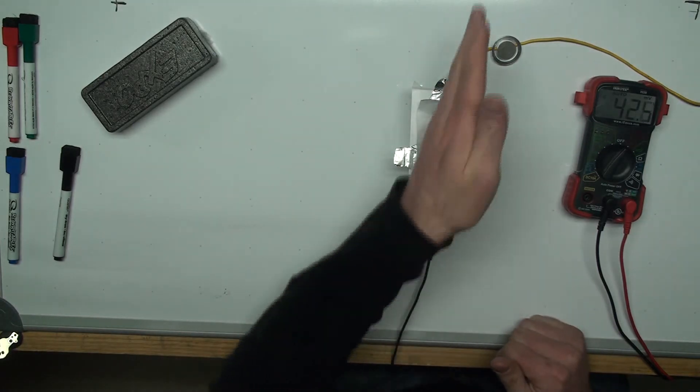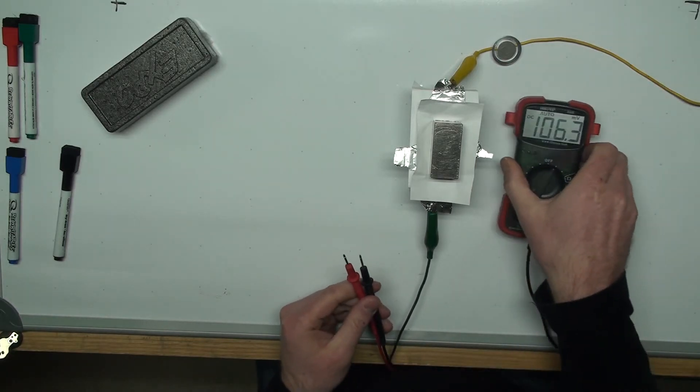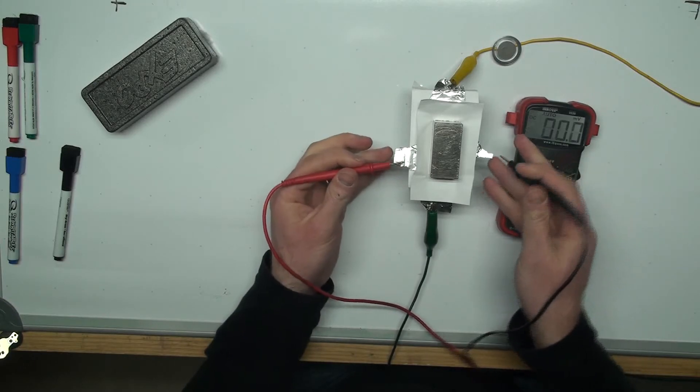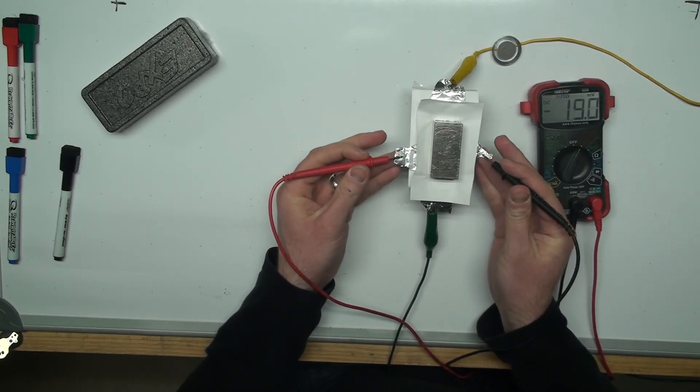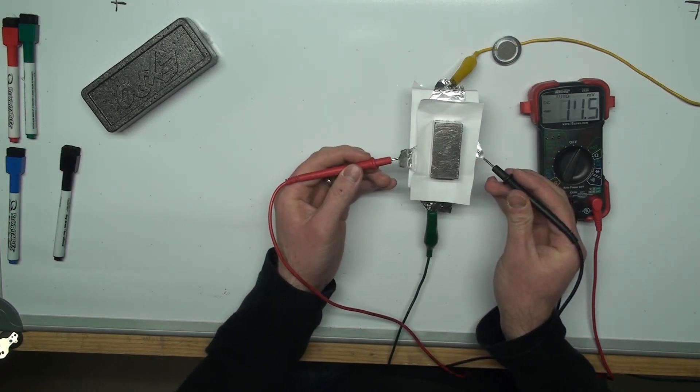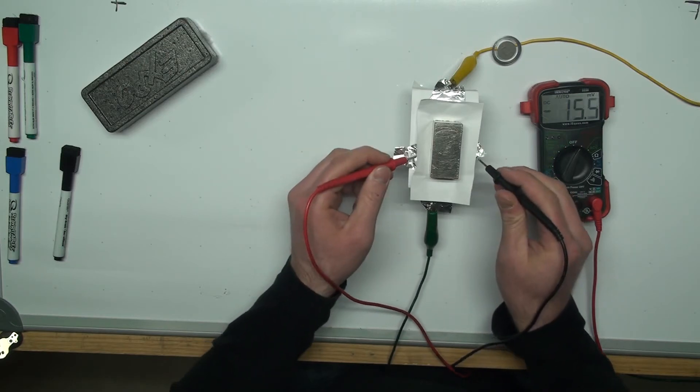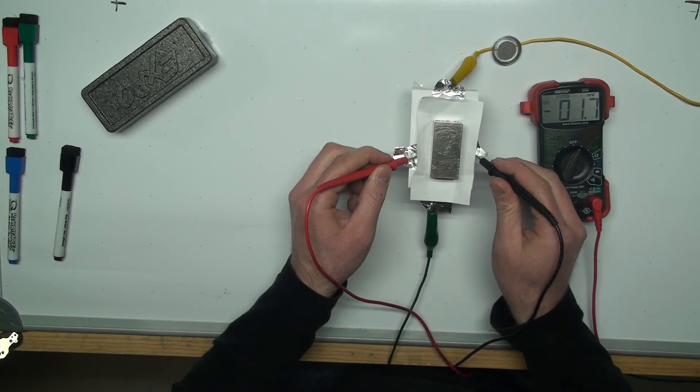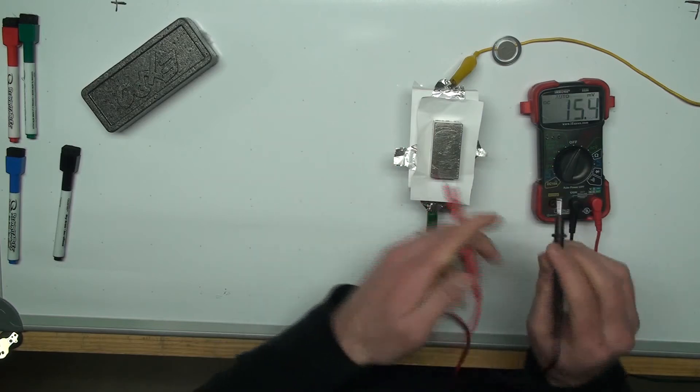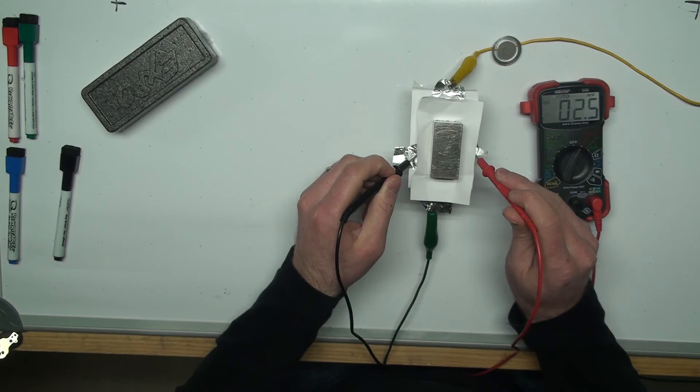The electron current is actually traveling this way, and then we're going to use the voltmeter on these two tabs. You should see negative one millivolt. So if I flip these around, we have one millivolt.